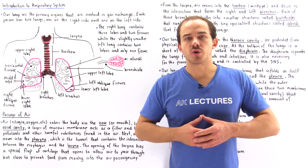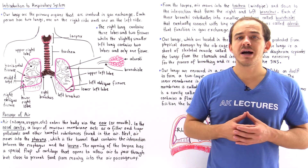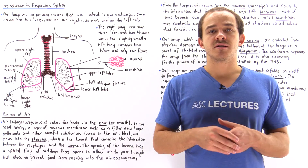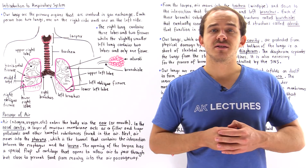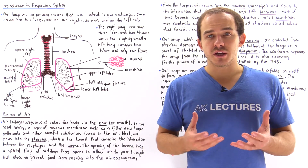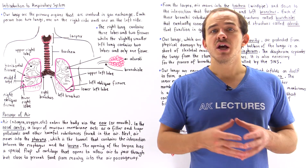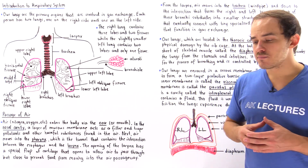The human respiratory system is a system of our body that is involved in the process of respiration, in the process of breathing. It exchanges oxygen for carbon dioxide.